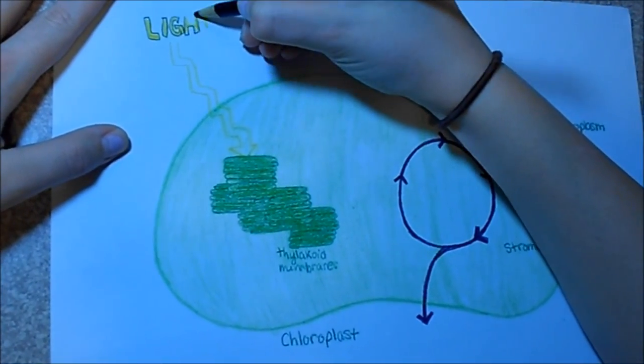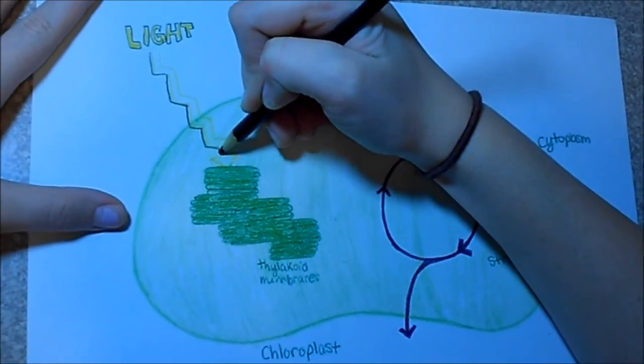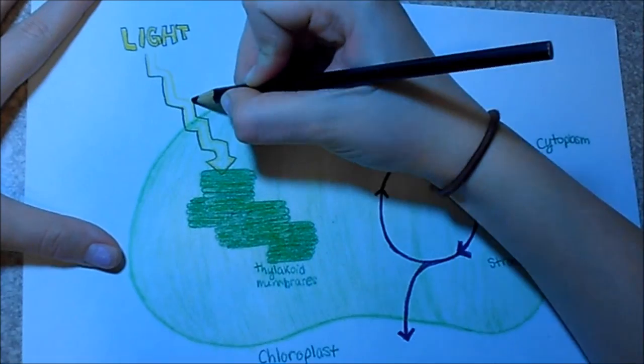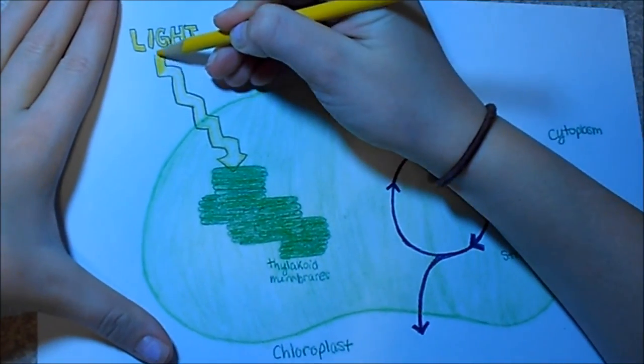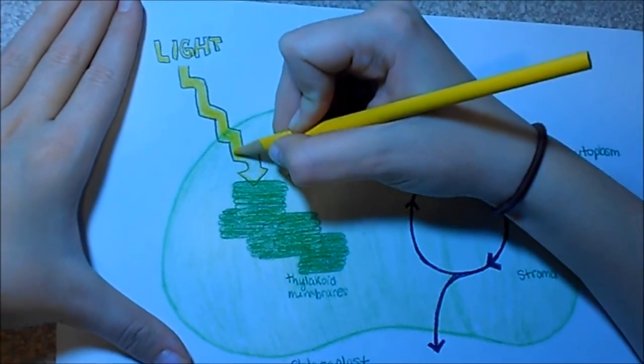Light goes into the cell from the sun and the photons, which make up light, excite the electrons in the thylakoid membranes. The excited electrons then go through the electron transport chain and give off their excited energy to the array of enzymes there.